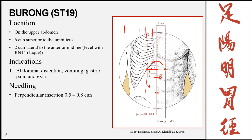Because of its location on the upper abdomen, ST19's indications change from the chest points. This point can be used for abdominal conditions such as abdominal distension, vomiting, gastric pain, and anorexia. The insertion is now perpendicular, 0.5 to 0.8 cun — deeper than the previous chest points, and perpendicular insertions are now appropriate.